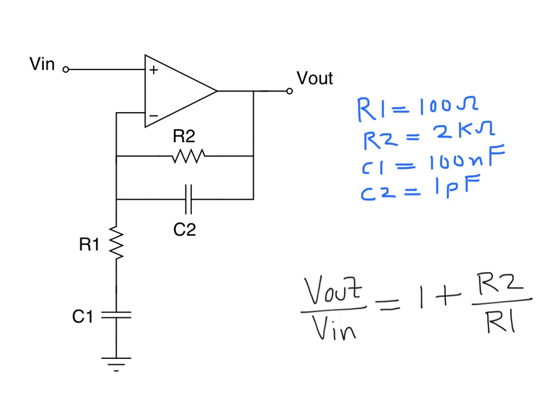I hope most of you who are familiar with op-amp circuits know this formula by now. Some of you may ask: why aren't the capacitors in this equation? Well, that's because I've made some assumptions. You'll notice that C2 here is about 100,000 times smaller than C1. Therefore, at mid-band frequencies, C1 is a short and C2 is open. This is why there are no capacitors in this equation.